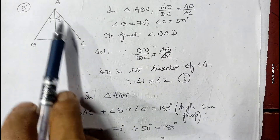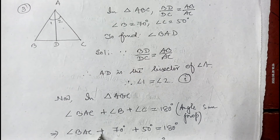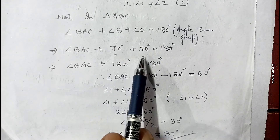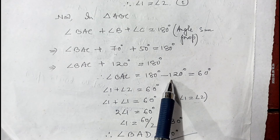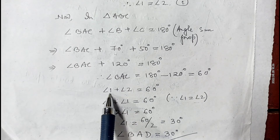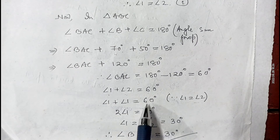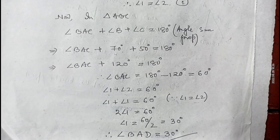So angle BAC equals 180 minus 120 equals 60 degrees. Since angle BAC is the sum of angle 1 and angle 2, and both angles are equal, we write angle 1 plus angle 1 equals 60, so twice angle 1 equals 60, giving angle 1 equals 30 degrees. Therefore angle BAD equals 30 degrees.